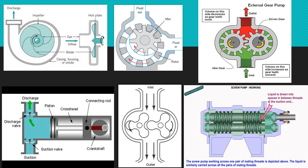This slide shows the basic construction of different types of pumps. This is a centrifugal pump, this is the vane pump, this is a screw pump, this is an external gear pump, this is a screw pump, this is a lobe pump, and this is a reciprocating piston type pump. The major difference is in the construction of the impeller.